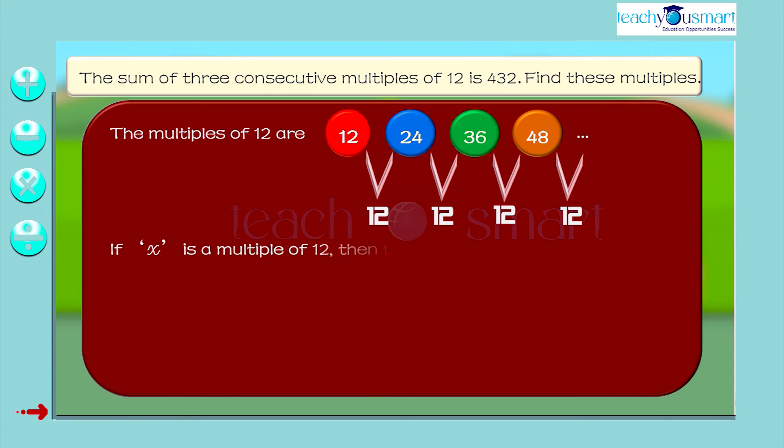Generally, if x is a multiple of 12, then the next multiple is x plus 12, and the next to this is x plus 12 plus 12, that is x plus 24.